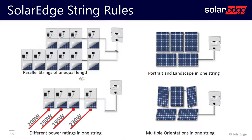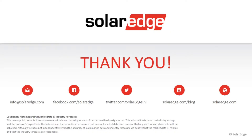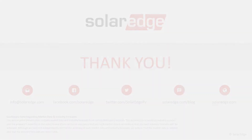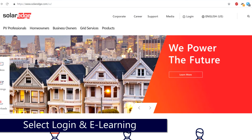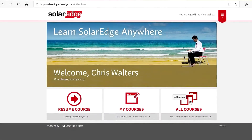With SolarEdge you're allowed to have paralleled strings of unequal length. We can also mount modules in portrait or landscape orientation without any special requirements. You can have different power ratings on different modules connected to an optimizer, or modules on different orientations on the same string. Thank you for joining us at SolarEdge University. For additional information and more in-depth tutorials, go to solaredge.com, select Login and E-Learning to access the library of SolarEdge learning materials.